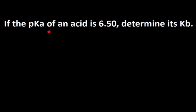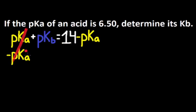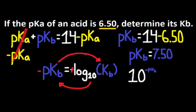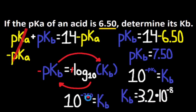Let's tackle this problem. If the pKa of an acid is 6.50, determine Kb. We can get Kb from pKb, or from Kw = Ka × Kb. Since we don't have Ka but we have pKa, we use pKa plus pKb is equal to 14. Isolating pKb gives pKb is equal to 14 minus pKa. With pKa = 6.50, pKb is equal to 14 minus 6.50, which equals 7.50. With pKb, we use 10 to the negative pKb is equal to Kb. So 10 to the negative 7.50 gives Kb is equal to 3.2 times 10 to the negative 8. pKb has two decimal numbers, so we have two sig digs.